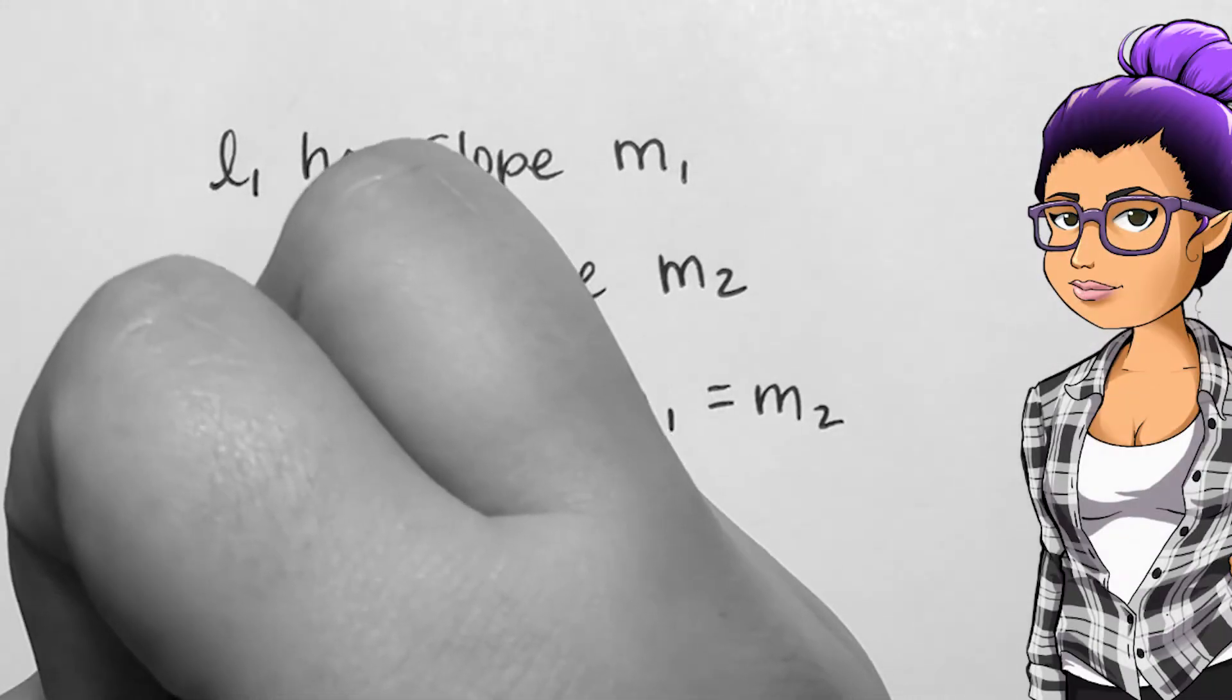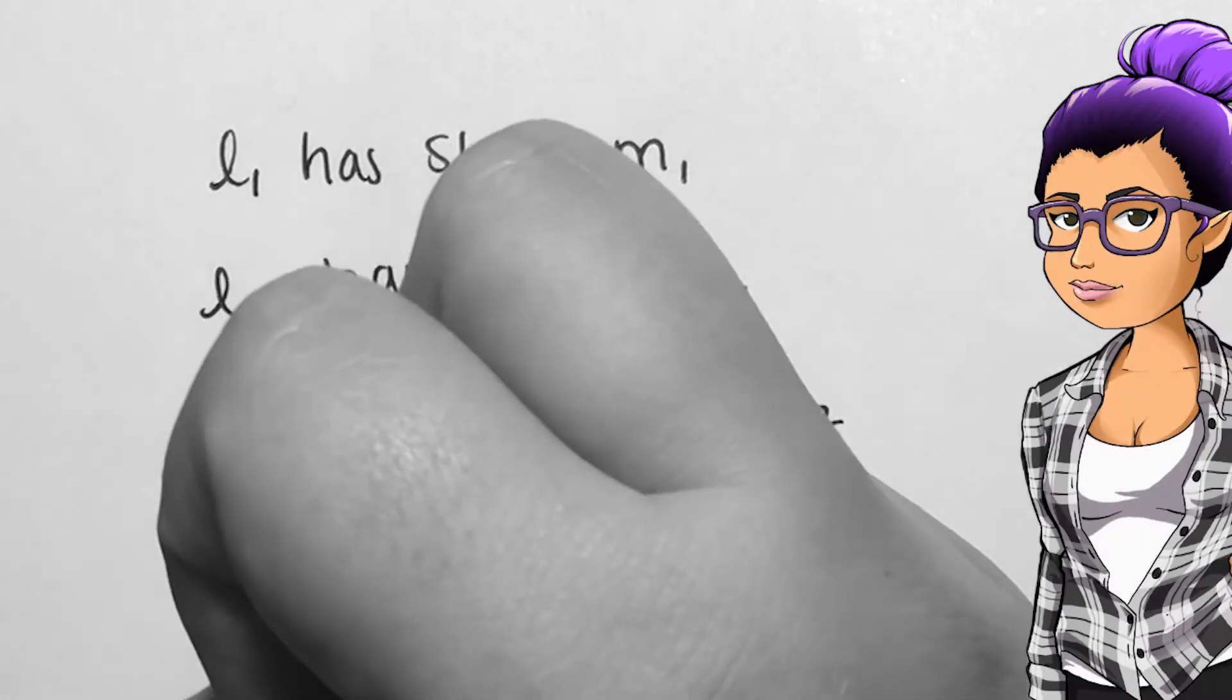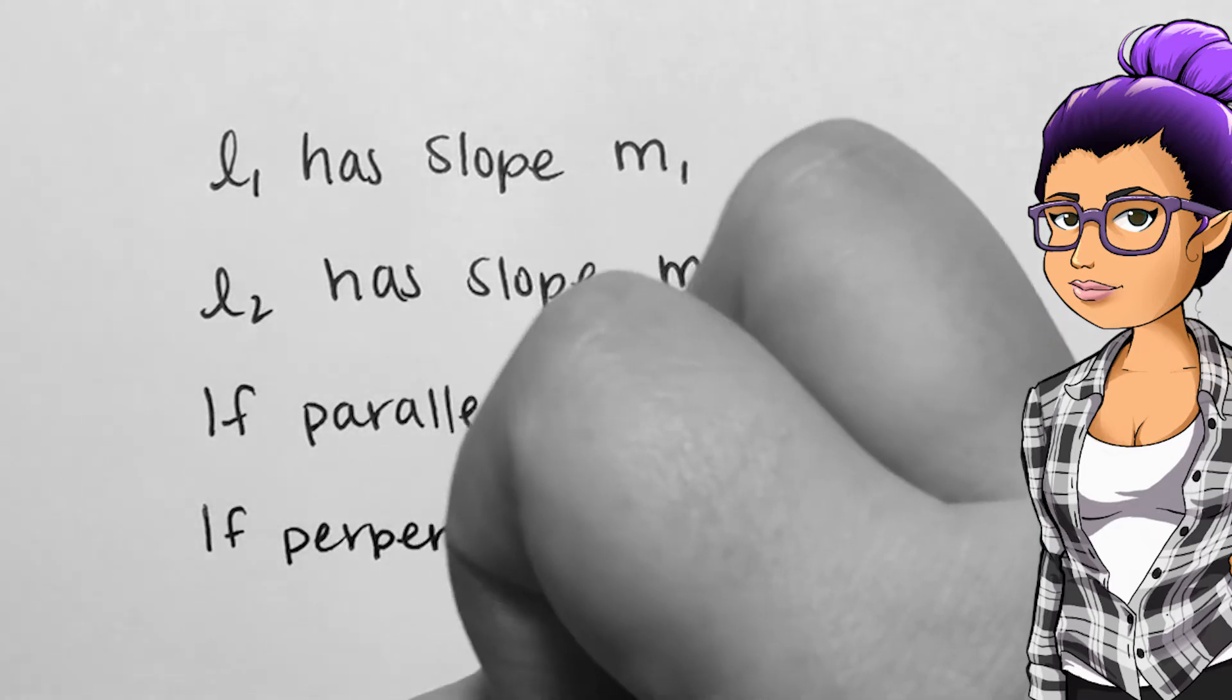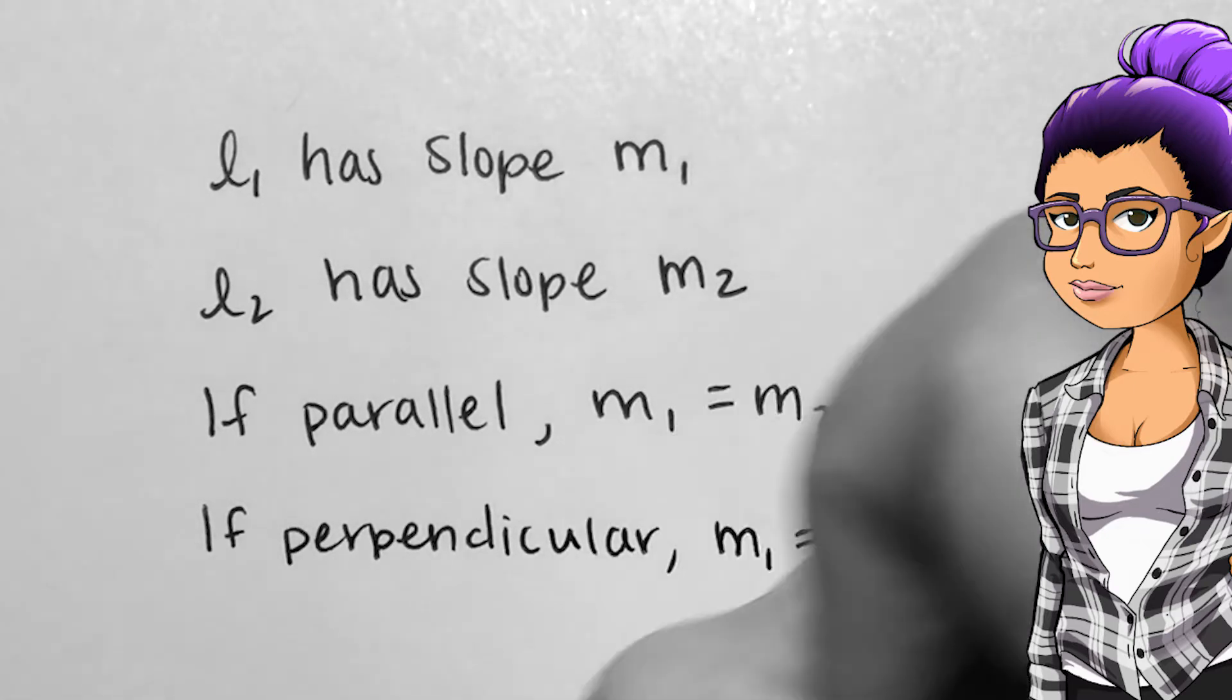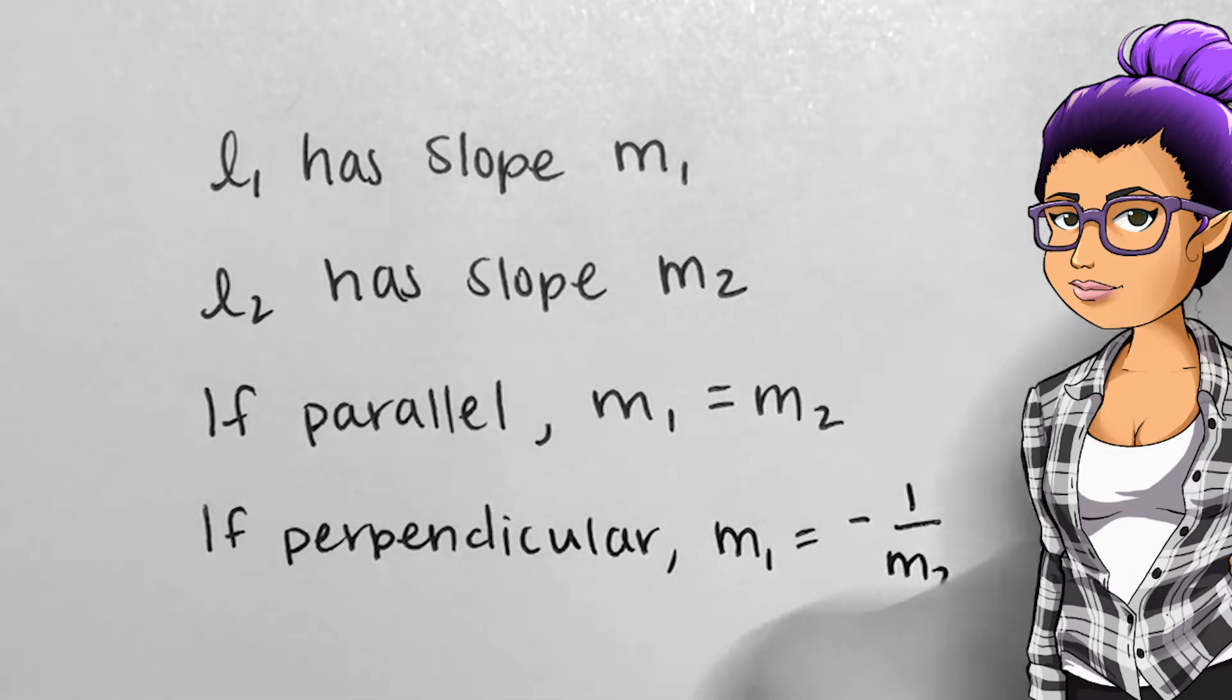A pair of lines L1 and L2 with slopes M1 and M2 respectively will be perpendicular if M1 equals negative 1 over M2, that is, they are negative reciprocals of each other.